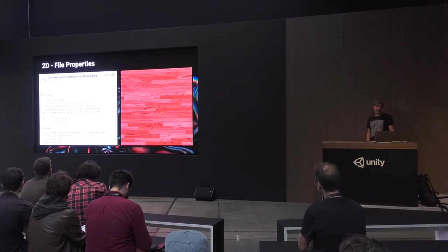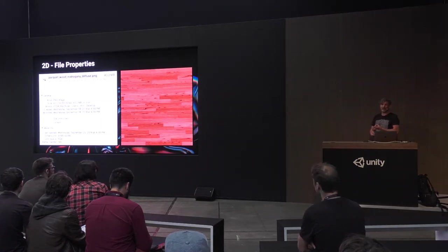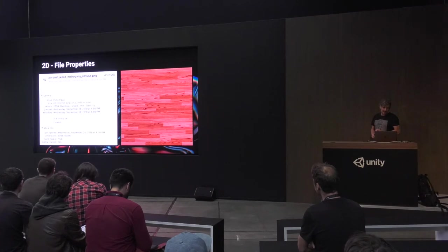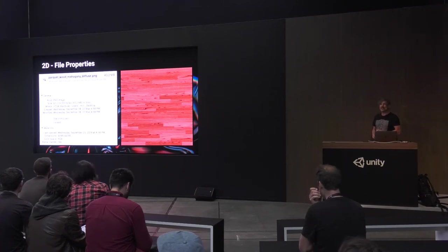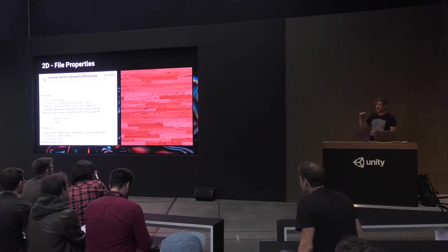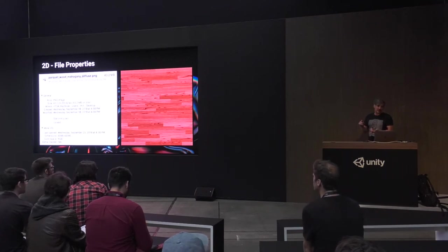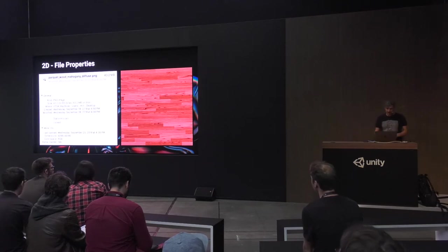Here's an example of a no-no. You want your files to be power of two if possible — if not, you can't use compression in Unity. This is a 4K texture, which is okay, but when I look at the bottom it says color space RGB and alpha channel yes. Why does that need an alpha channel? It's a piece of wood. You want to strip out what you don't need. Be power of two, and get that unnecessary alpha channel out.